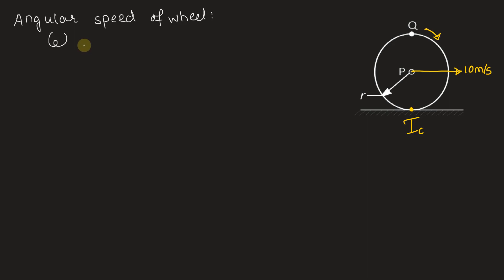This omega can be given as velocity of any point on the wheel divided by the distance from instantaneous center. So we can write velocity at point P, vP, divided by this distance r. Because radius of the wheel is r, this distance between the instantaneous center and P is r. So we can write vP upon r. Therefore vP is r omega. Putting the value of vP, we have r omega is 10 meters per second.